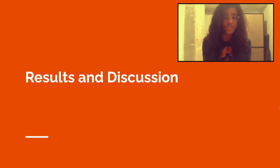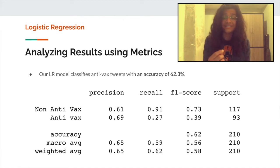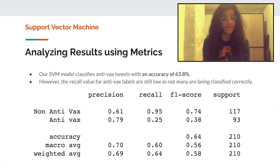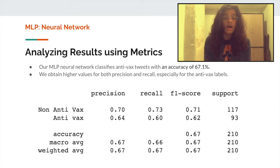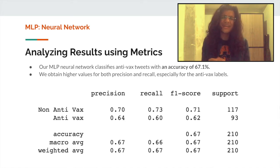Now that we have trained our machine learning models on the dataset, it's time to analyze their performance using various metrics. Logistic regression performs okay with an accuracy of 62%, but its recall value for the anti-vax data points is very low at 0.27. We obtain similar results for the support vector machine model as well. Our MLP neural network does a lot better than the previous two, getting an accuracy of 67%, with both precision and recall now above 60%, showing that it is majorly able to identify a tweet as being anti-vaccine or not.